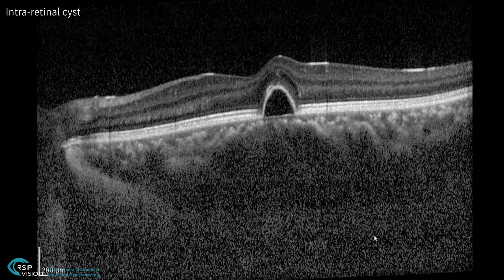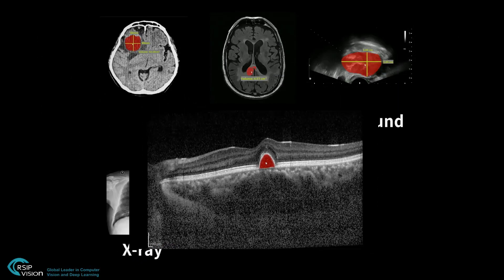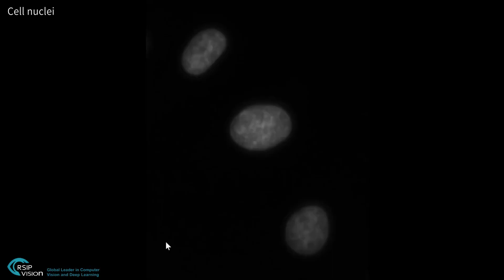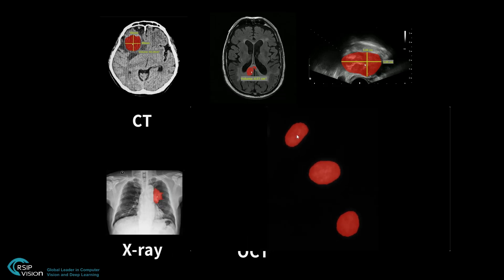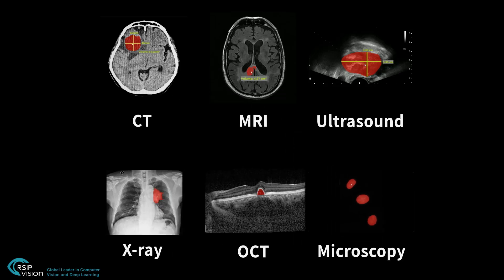We can perform segmentation on non-homogenous regions, complex shapes, textures, and blurry edges. This unique solution lets the expert quickly visually identify the relevant finding. The algorithm then performs the labor-intensive pixel-wise segmentation and measurements automatically. This mode of operation enables a significantly accelerated time to market and regulatory route.